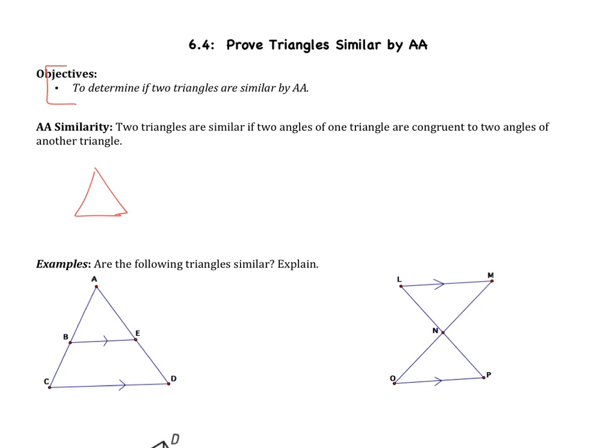So we have one objective: we are going to determine if two triangles are similar. AA similarity says two triangles are similar if two angles of one triangle are congruent to two angles of another triangle. So all you're going to be determining today is do my triangles have two pairs of angles that are congruent.